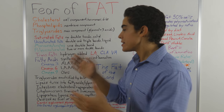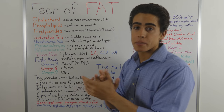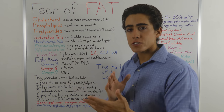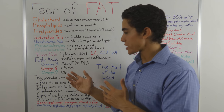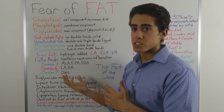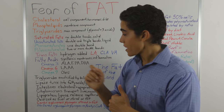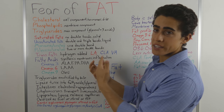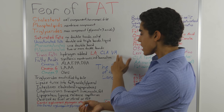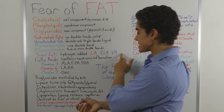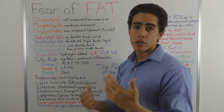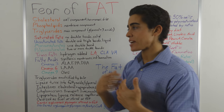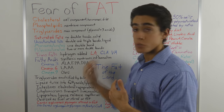Trans fats are usually associated with negativity, and there's good reason. The artificial man-made trans fats are essentially vegetable oils — which are poison — that have hydrogen added to them to make them solid at room temperature. However, conjugated linoleic acid and vaccenic acid are naturally occurring forms of trans fat that occur in animal flesh as well as human breast milk.